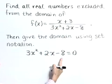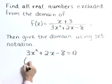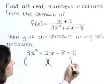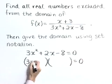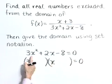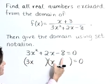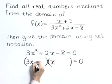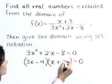So let's solve for x. This is a quadratic equation. Let's solve it by factoring. The first terms of these binomials must be 3x and x to give a product of 3x squared. Factors of negative 8 that are going to work with this are minus 4 and plus 2.